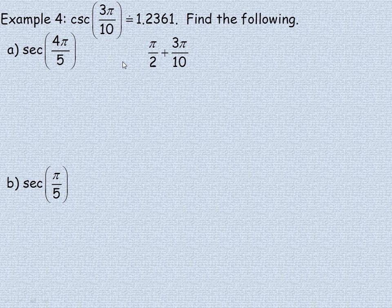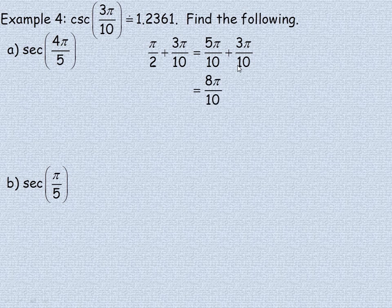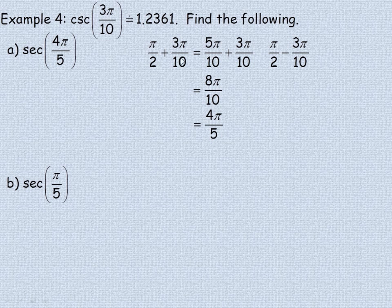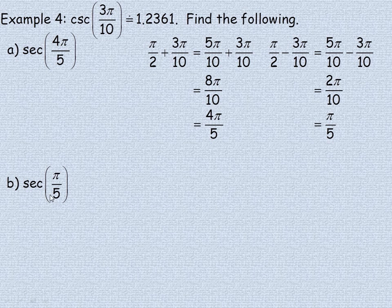In one of these it's pi over 2 plus an angle, and the other uses the minus identity. If we take pi over 2 and add 3 pi over 10, getting a common denominator by multiplying pi over 2 by 5 top and bottom, that gives 8 pi over 10, which simplifies to 4 pi over 5 — needed for part A. For the subtraction: pi over 2 minus 3 pi over 10 gives 5 pi over 10 minus 3 pi over 10, which is 2 pi over 10, reducing to pi over 5 — needed for part B.